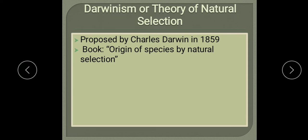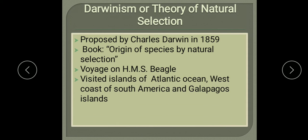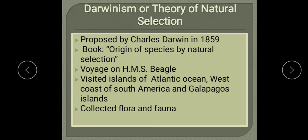Charles Darwin was a British naturalist who got an opportunity to travel by a ship named the HMS Beagle. The voyage lasted five years, during which Darwin visited many islands of the Atlantic Ocean, the west coast of South America, and the Galapagos Islands. He collected their flora — plant species — and fauna — animal species — and observed a huge biodiversity and the trends of life during his voyage.